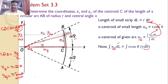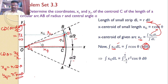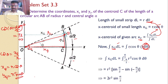Substituting, the numerator integral becomes ∫ from −α/2 to +α/2 of R·cos θ · R·dθ, which is R² ∫ cos θ dθ. Performing the integration and substituting the limits gives sin(α/2) − sin(−α/2). Since minus of minus gives plus, this becomes 2R²·sin(α/2).